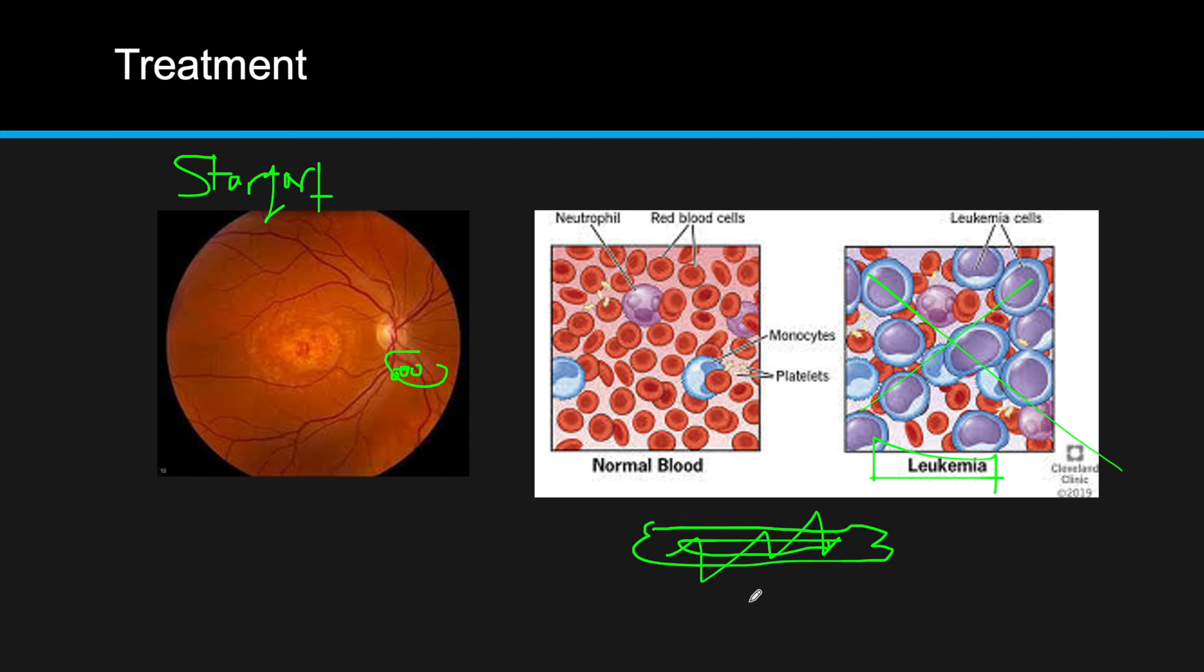You can see the leukemia cells here overtaking the blood and causing all types of problems. In order to cure this disease, the bone marrow where blood cells are produced needs to be completely wiped out by chemotherapy.